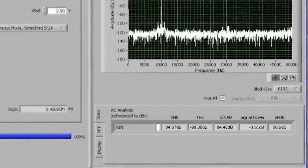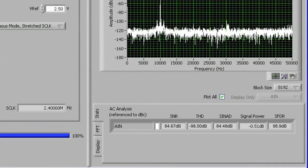The SNR is 84.67. The THD is minus 98. The signal and noise ratio plus distortion is 84.48. And the SFDR is 98.9 dB.